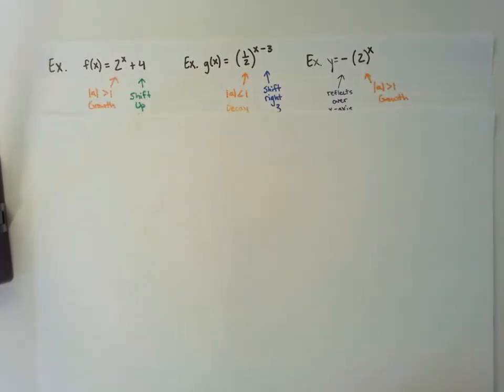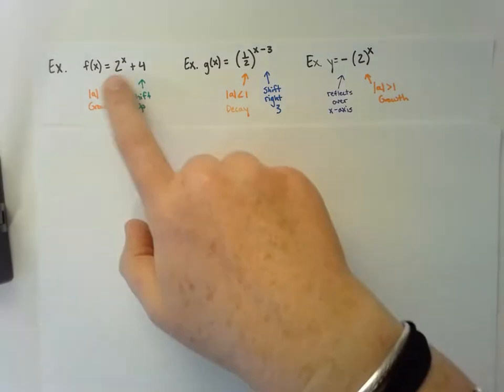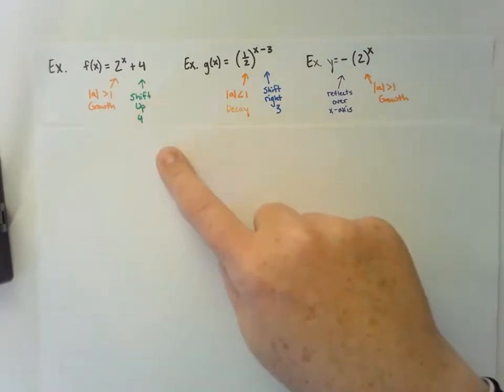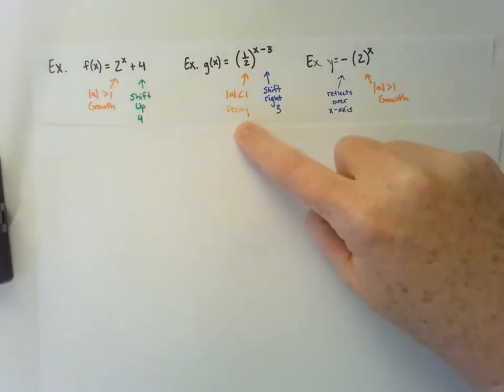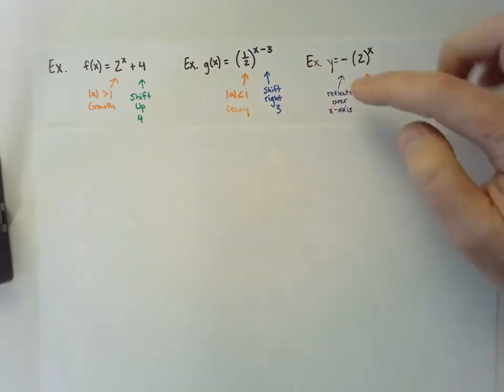So I wrote those down ahead of time to make them nice and pretty. Again, that one would be growth and go up 4. This one would be decay and go to the right 3, and this one would reflect over the x-axis and be a growth function.